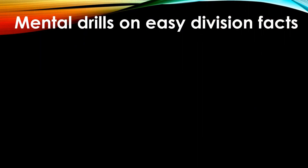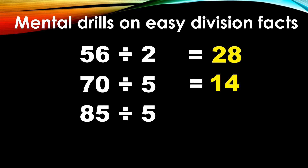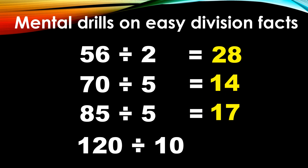Before we proceed to our lesson for today, let us answer first the following division facts. Let us try how good you are in division. So if you are ready, let's go! The first number is 56 divided by 2 is equal to 28. The next number is 70 divided by 5, the answer is 14. The next number is 85 divided by 5 is equal to 17. The next number is 120 divided by 10 is equal to 12.